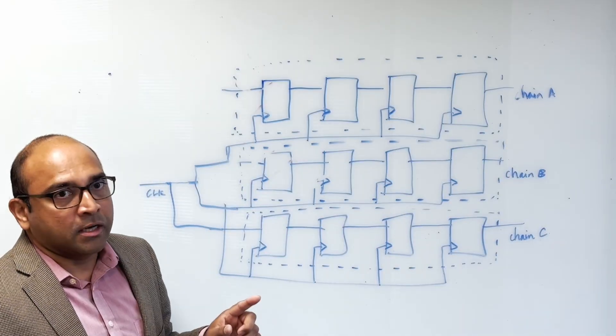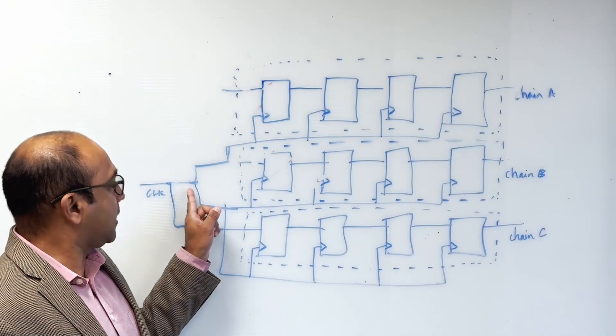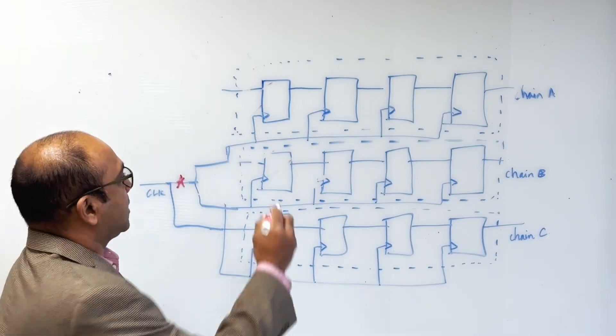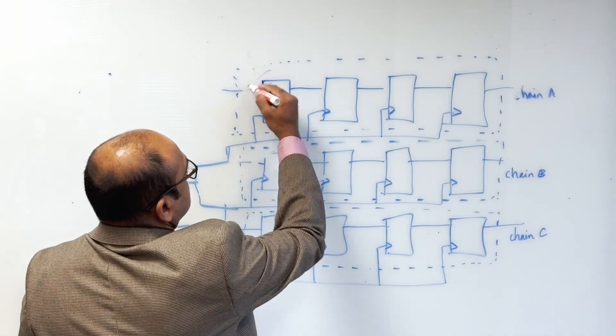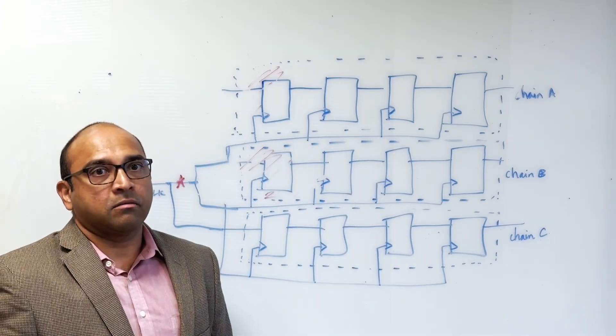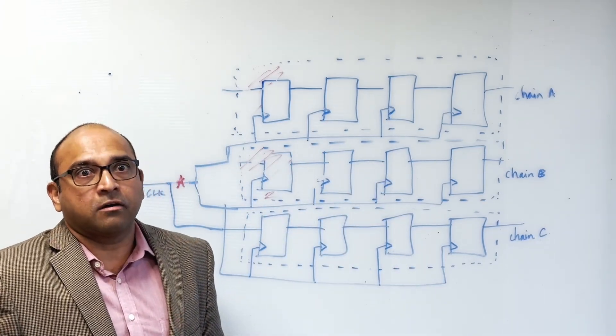Imagine now that you have a defect in this clock tree, somewhere here. What ends up happening is you see two different scan chains, scan chain A and scan chain B, that don't seem to shift data correctly through them.